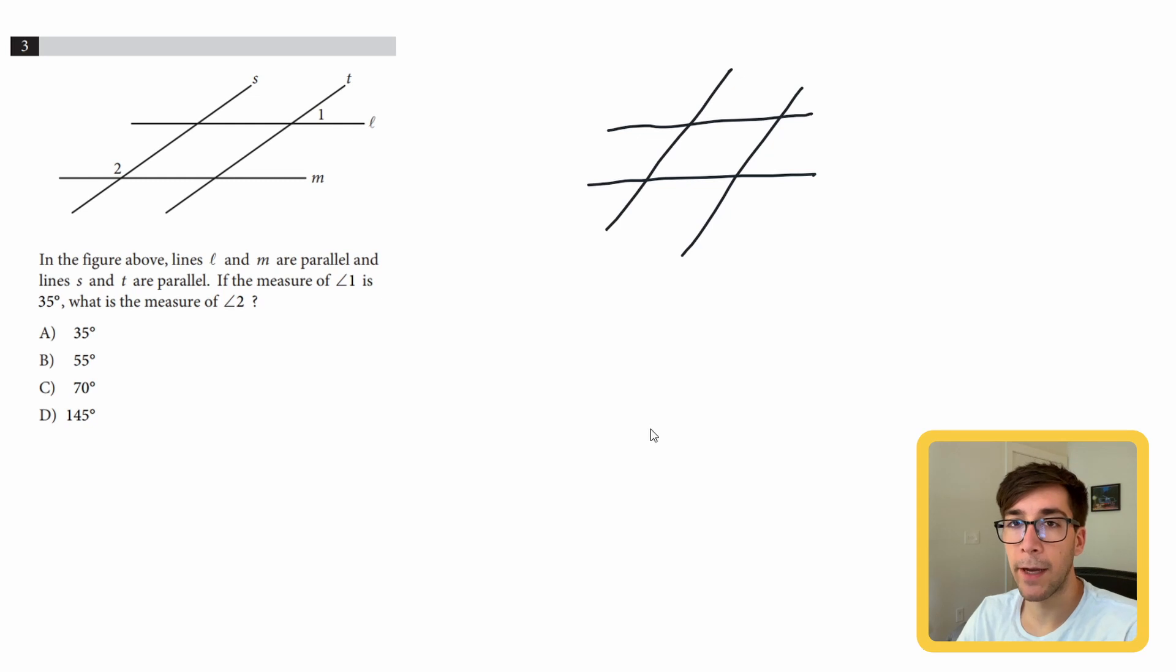On the SAT, you're probably going to see some kind of variation of this shape here with some lines intersecting each other. And here's how to break down the angles.